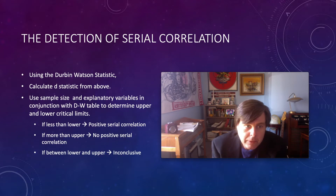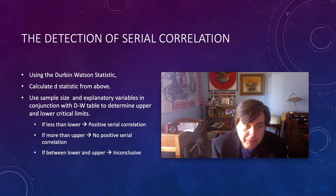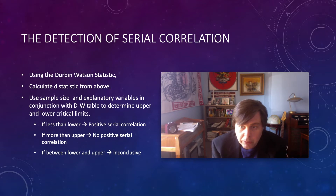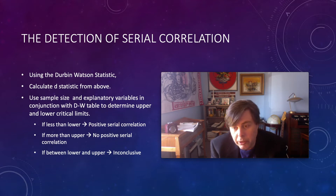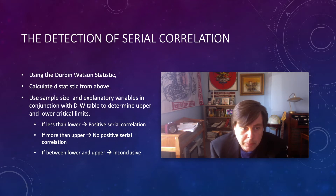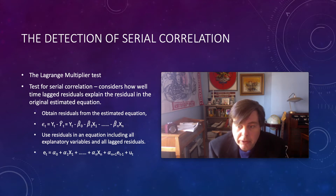To use the Durbin-Watson statistic, you take the statistic from your regression output, the sample size n, and the number of explanatory variables — both of which impact degrees of freedom. You then use a Durbin-Watson table, available in any good statistics book or online, to determine the upper and lower critical limits associated with your test statistic.